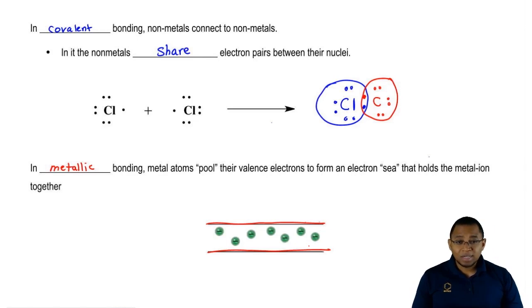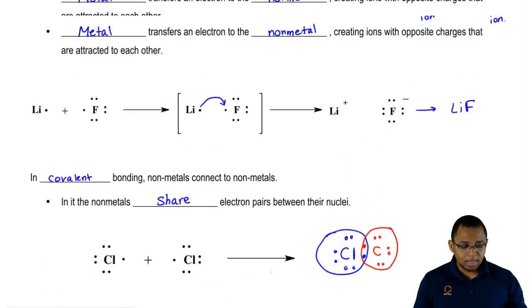Now metallic bonding, you're normally not going to see. I wouldn't worry too much about this third type of chemical bonding. Know that it exists but don't worry too much about what it looks like. The most important ones are ionic bonding and covalent bonding.